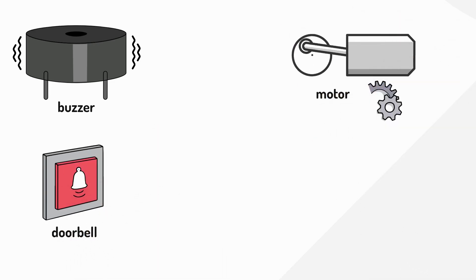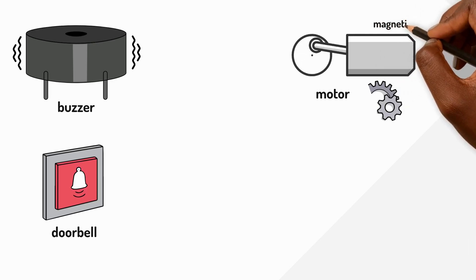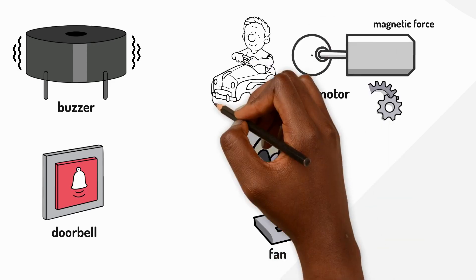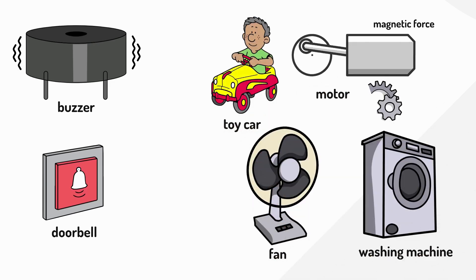A motor spins around when electricity flows through it. Inside, electricity creates a magnetic force that makes parts rotate. Motors can power fans, toy cars and washing machines.